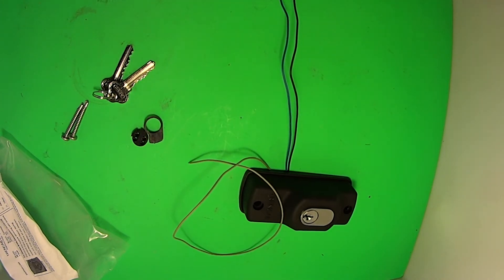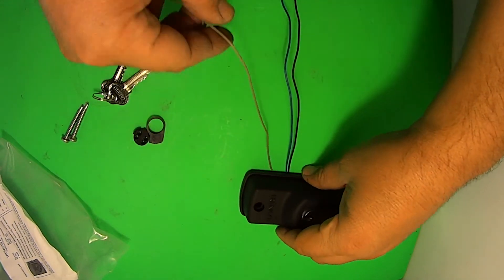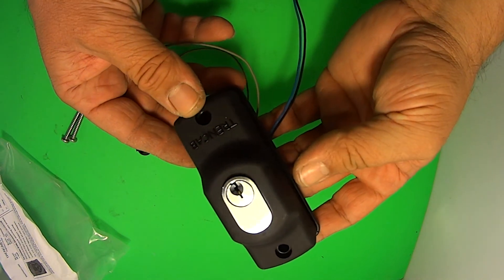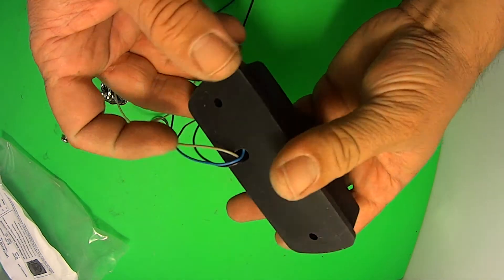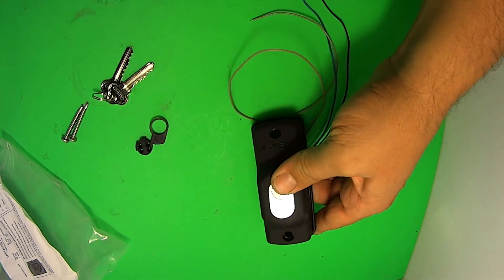So that's the on and off key switch by Trendcab. Available from drlock.com.au. Thanks for watching.